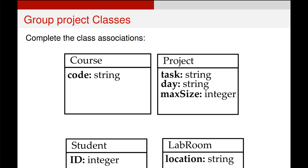Well, in the text description, the project class clearly has a task, a day, and a max size. So we put those attributes in, and we give them types. And I've said that the task and the day are string, and then the max size is an integer. I could alternatively have said that the day is a date object rather than a string, but I decided to leave it as day, assuming that it meant day of the week.